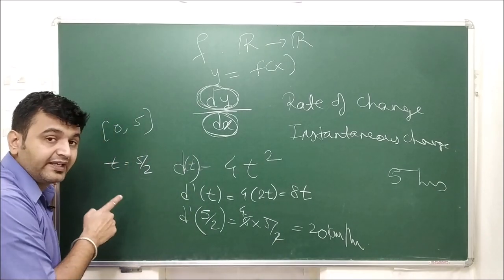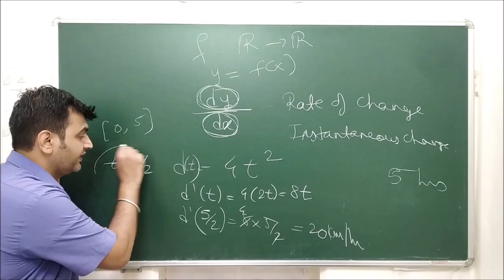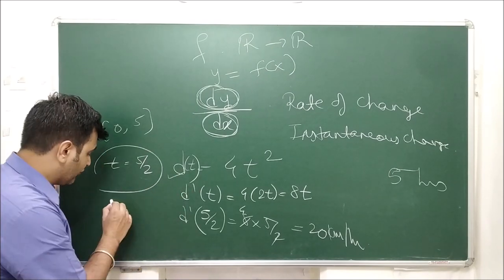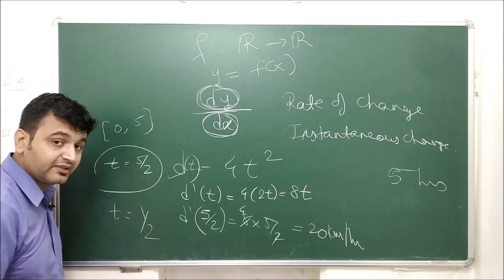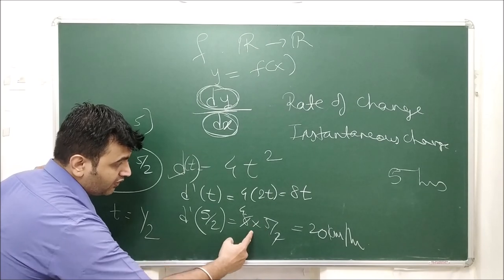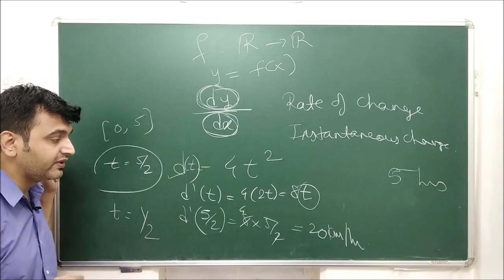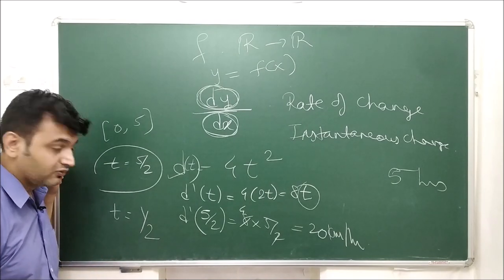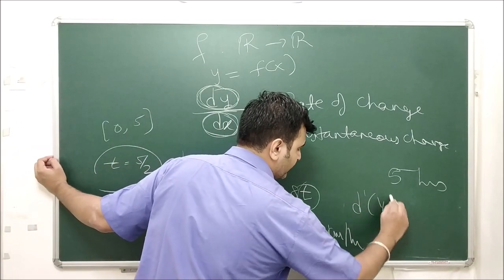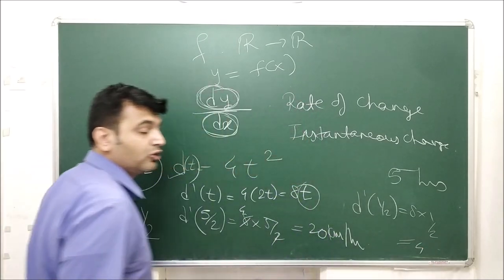At t = 5/2, the speedometer reads 20 km/h. If instead we want the speed at t = 1/2 (after 30 minutes), we compute d'(1/2) = 8 · (1/2) = 4 km/h. So the derivative gives us the instantaneous speed at any given moment.